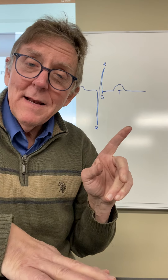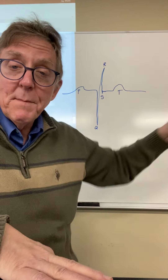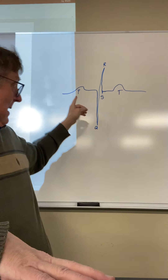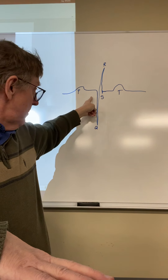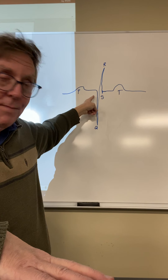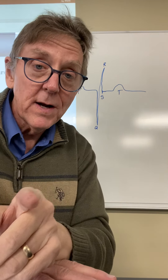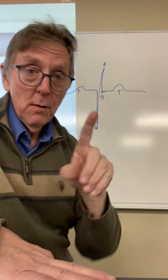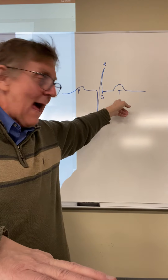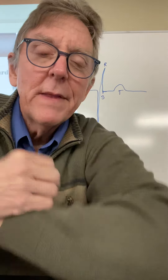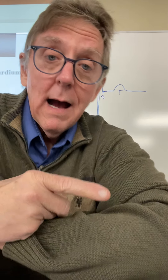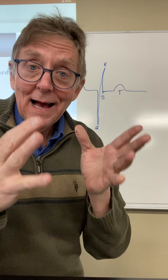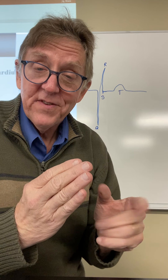And this is time, by the way. So we have the contraction of the atria, with a little bit of time, and then the contraction of the ventricles. And then, with a little bit of time, we have the T wave. What would the T wave be? It's the relaxing of the two ventricles.